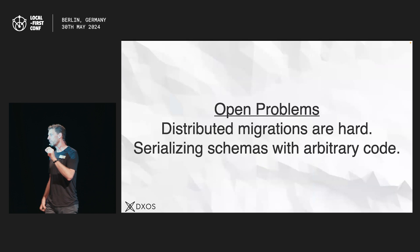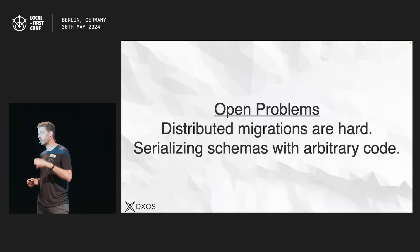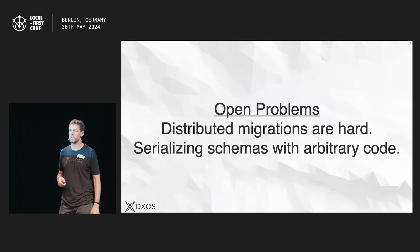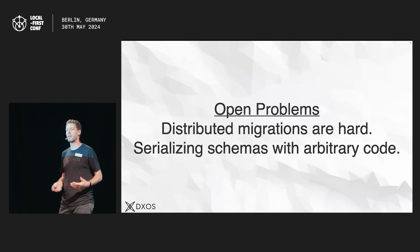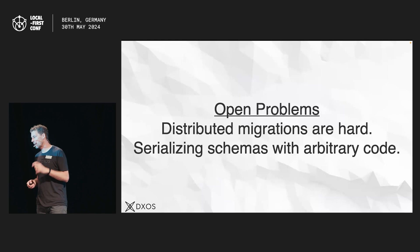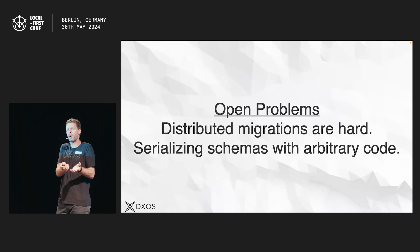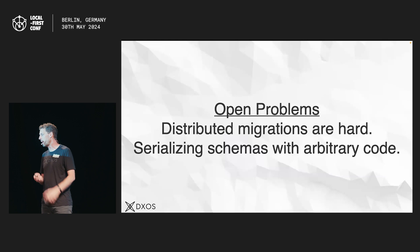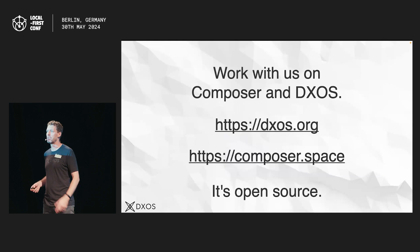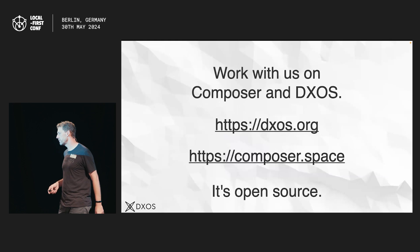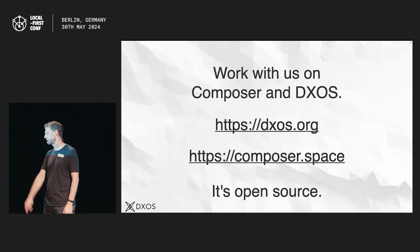Two quick caveats before I send you to lunch. There are open problems we're still working through. Distributed migrations are hard — we have a pragmatic solution in DXOS right now, but it is guaranteed to lose data in certain edge cases. That's why we work with this community to think about things like what Cambria 2 would look like for true distributed migrations that preserve data over time. Also, validations for schemas can be described as arbitrary code, but if you're persisting those to JSON Schema, how do you describe arbitrary code in JSON Schema? And what should the execution constraints be around arbitrary code you just got from a database? Both DXOS and Composer are open source — we're actively building this. Come help us build it, solve some of these hard problems, and let's make better software.